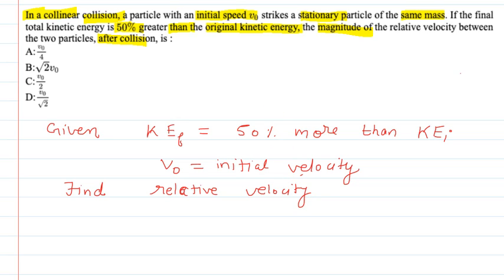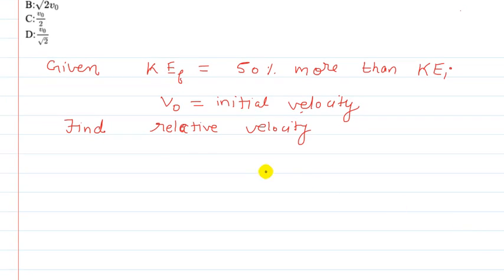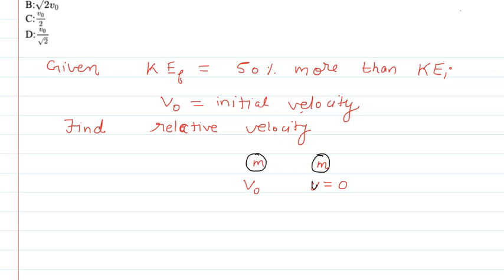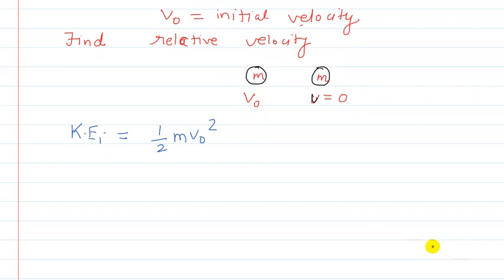Now let us do this question. Both particles have the same mass and let us draw the figure. Suppose these are the two bodies — this is your first body, this is your second body. The second one is at rest, meaning its velocity is equal to 0, and the first one has velocity V0. Both have mass m. So the initial kinetic energy Ki will be equal to half m V0 squared. This is your initial kinetic energy.